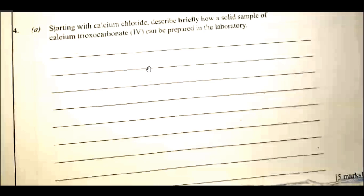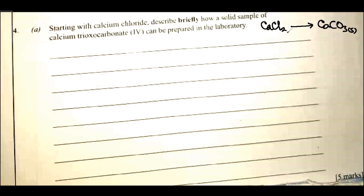Starting with calcium chloride: describe briefly how a solid sample of calcium trioxocarbonate(IV) can be prepared in the laboratory. For questions like this, you write out the starting material and the end material. This one is insoluble, while calcium chloride is soluble. This is a double decomposition to prepare an insoluble salt, so you bring in another soluble compound containing the trioxocarbonate(IV) radical — in this case you can use sodium carbonate or potassium trioxocarbonate(IV).